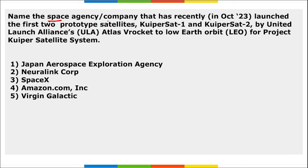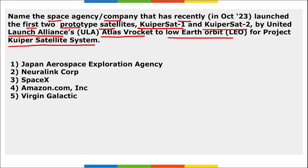Next: name the space agency that recently launched the first two prototype satellites — Kuiper Sat 1 and Kuiper Sat 2 — via United Launch Alliance Atlas 5 rocket to low-Earth orbit for Project Kuiper Satellite System. It is Amazon.com Incorporated.